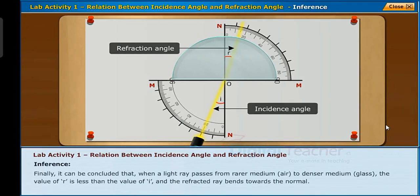Inference: Finally, it can be concluded that when a light ray passes from rarer medium air to denser medium glass, the value of r is less than the value of i, and the refracted ray bends towards the normal. Let us now learn about the case when a light ray bends away from the normal.